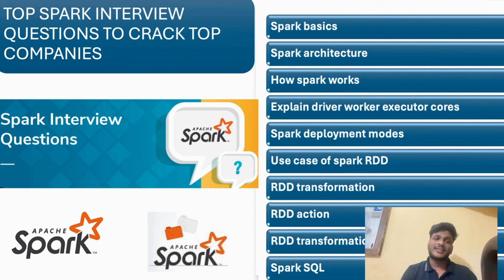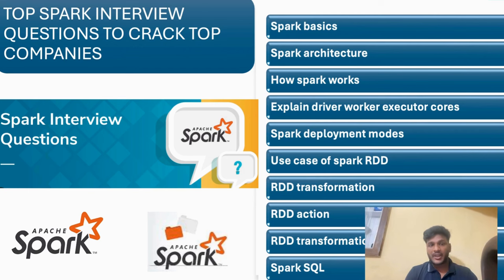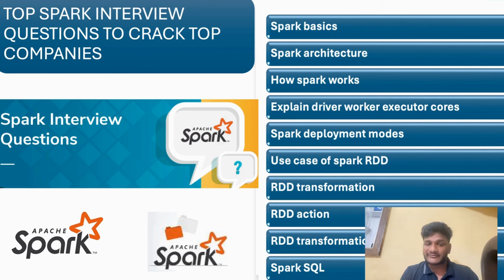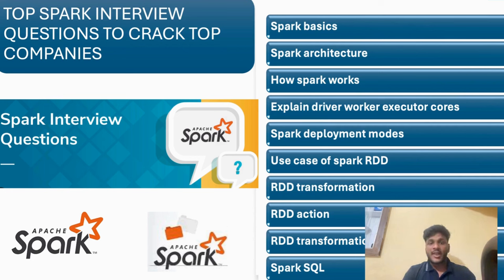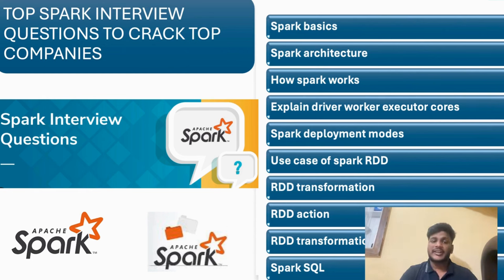To summarize the Spark basics topics: Spark architecture, how Spark works, driver-worker-executor concepts, how many cores should be in each executor memory, Spark deployment modes, use cases of Spark RDD, difference between RDD versus DataFrame — a very important question — RDD action and transformation functions, different types of transformation functions, and how shuffling and spilling work in Spark.